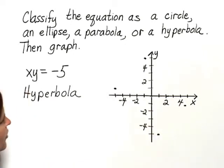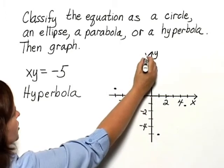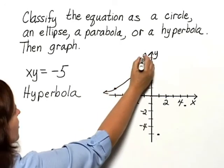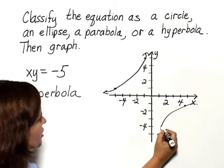It gives me a few points that will graph this. I'll have two branches, and I can just sketch a branch through here and the other branch here.